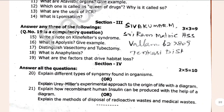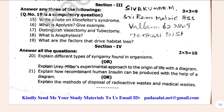You have 3-mark questions here. Explain different types of signals found in organisms. Explain Urey-Miller's experimental approach to the origin of life with a diagram. Explain how recombinant human insulin can be produced with the help of a diagram.